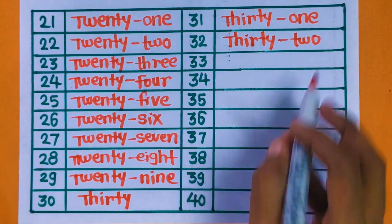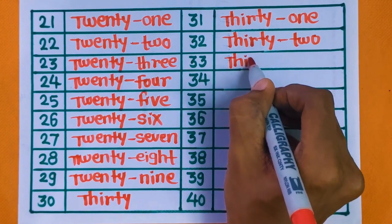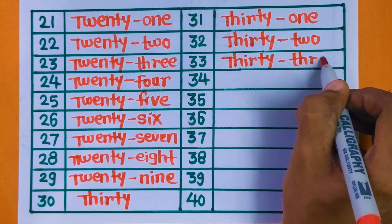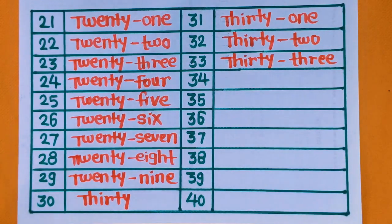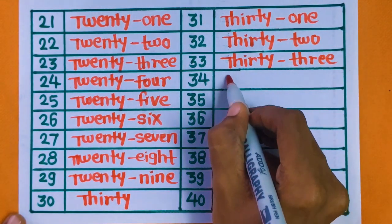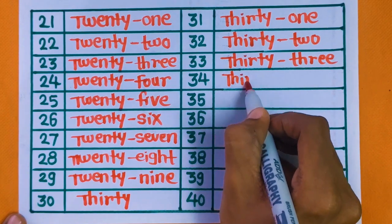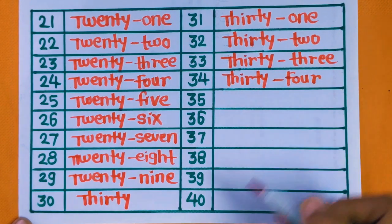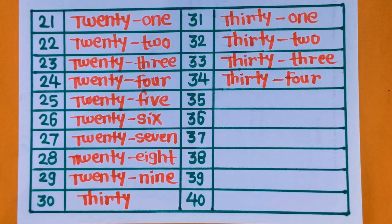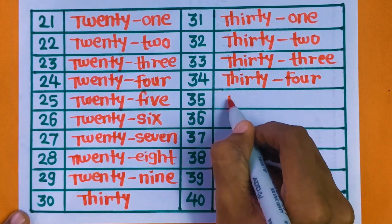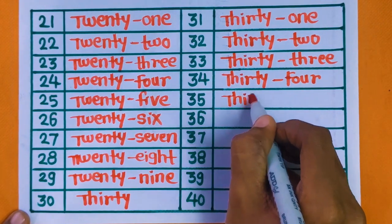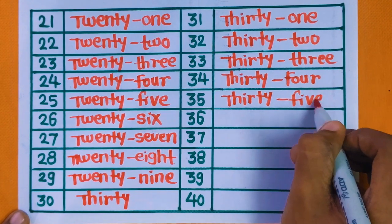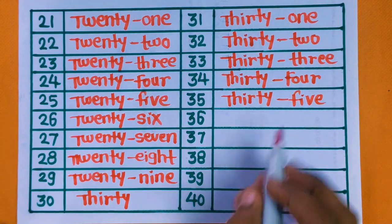Next is 33 — THIRTY THREE. 33. Next is 34 — THIRTY FOUR. 34. Next is number 35 — THIRTY FIVE. 35.